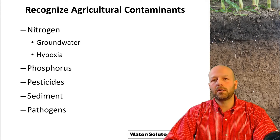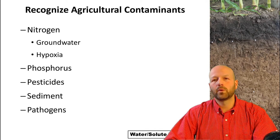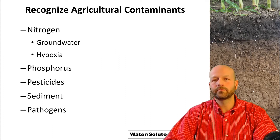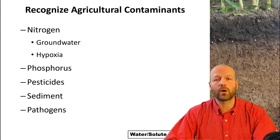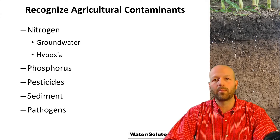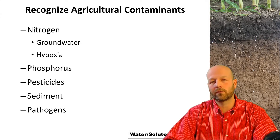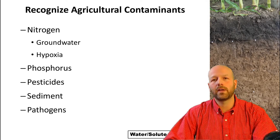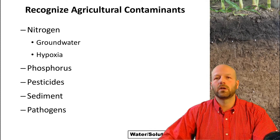Pesticides haven't been in the discussion a whole lot lately, but they can be an issue. They used to be a significant issue in the 80s and 90s where they were found a lot in groundwater, but we have pretty good management practices to address those these days. Sediment can also be a problem if it reaches a water column — it can reduce the amount of light that penetrates a lake, which affects the biology. And last but not least, there could be problems with pathogens — if you think about manure applications followed by a rainfall event and runoff, certain pathogens could be carried and create issues.